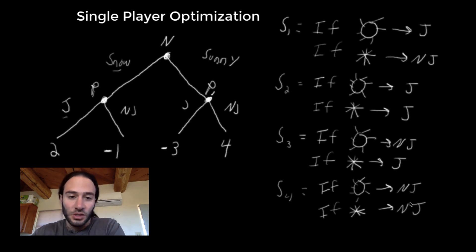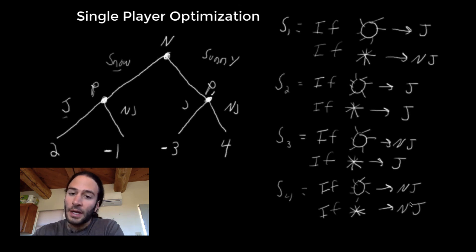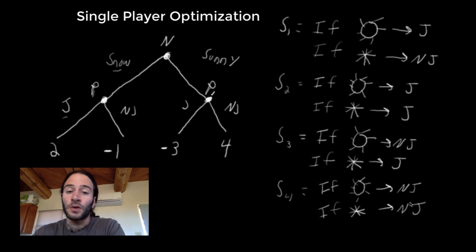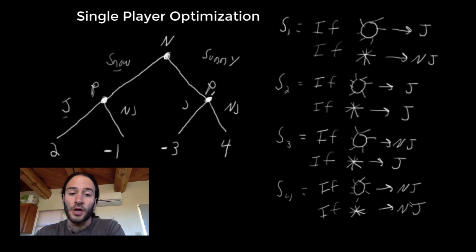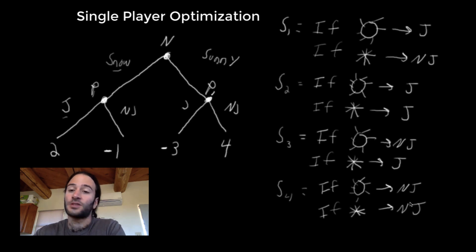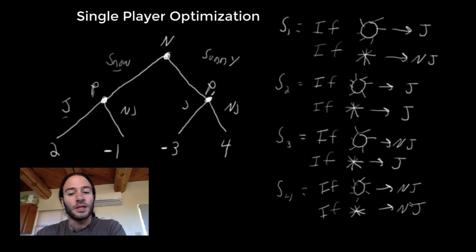What we see about this decision process is that even though the player will only take one action — either put on a jacket or don't put on a jacket — the strategy has to specify what it would do in each state of the world. For this reason, there are actually four possible strategies for the decision maker, for player one. It's important to realize this because when we get to subgame perfect equilibrium in the next lesson or two, this listing of strategies as conditional if-then statements is very crucial. In the next lesson, we'll actually move on to modeling a game.